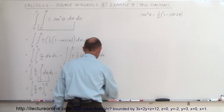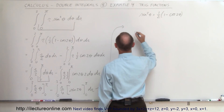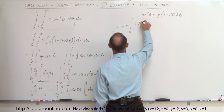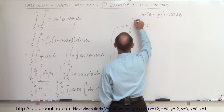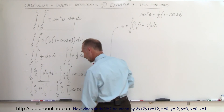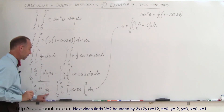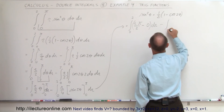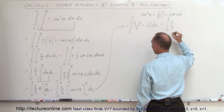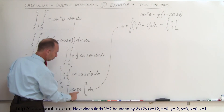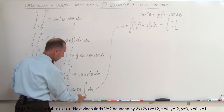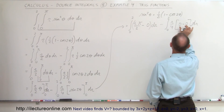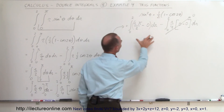Now I plug in the limits. For the first integral, plugging in the upper limit gives r times pi divided by 2, and the lower limit gives 0, so I have the integral from 0 to 2 of r pi over 2, dr. For the second integral, plugging in the upper limit: sine of 2π is 0, and sine of 0 is 0, so I get 0 minus 0 which is 0. This whole second integral goes to 0, and I'm just left with the first portion.